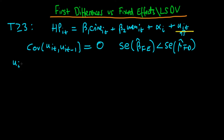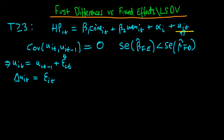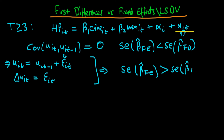If u_it follows a random walk, then u_it equals u_{i,t-1} plus some error epsilon_it, where epsilon_it is white noise. In those circumstances, when we take the first difference of the error as we do in first differences estimation, that differenced error will itself be white noise. Where we have this AR(1) process with very strong autocorrelation of the errors, it turns out that the standard error of beta hat fixed effects is greater than the standard error of beta hat first differences. So first differences is preferred when there is very strong autocorrelation.